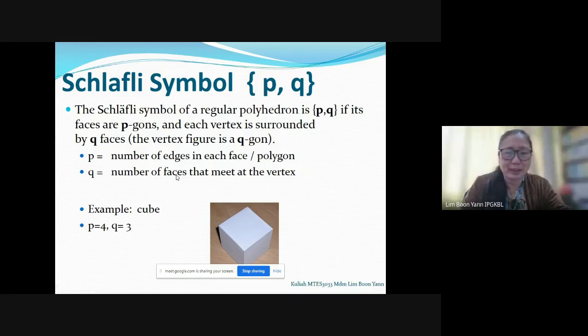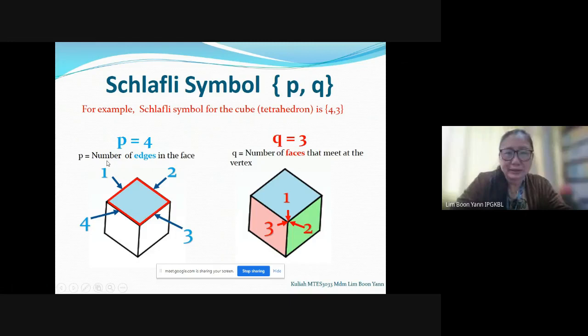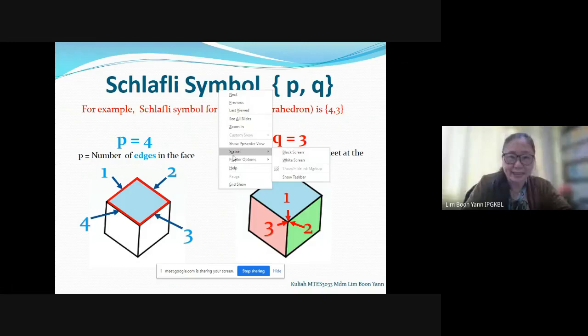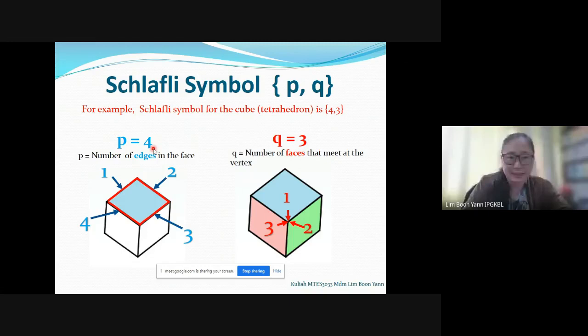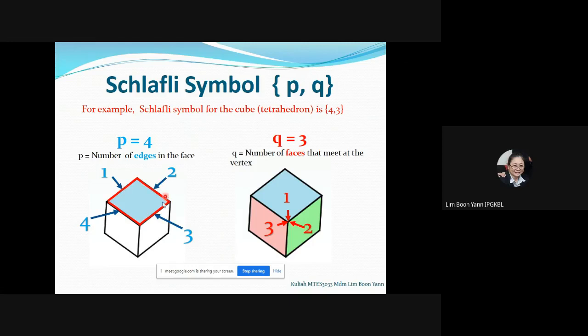Let me get my pointer out. So p refers to the number of edges. That means you have to look at the face. For example, we give the example of the cube or the tetrahedron. A tetrahedron is made up of square faces, so in each face is a square so we count the number of edges in the square. We have one, two, three, four. There are four edges here so p equals to four.